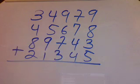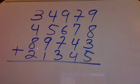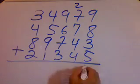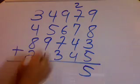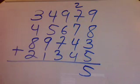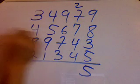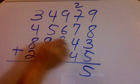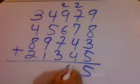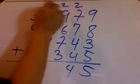The 9 and the 8 give me 17, plus 3 is 20, plus 5 is 25. The 2 and 7 give me 9, then 9 plus 7 is 16, plus 4 is 20, plus 4 is 24.